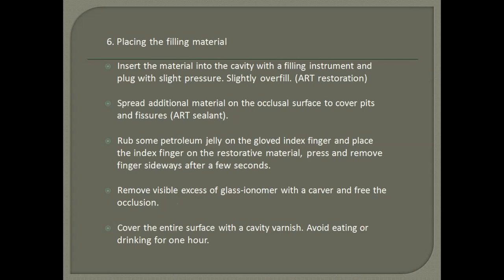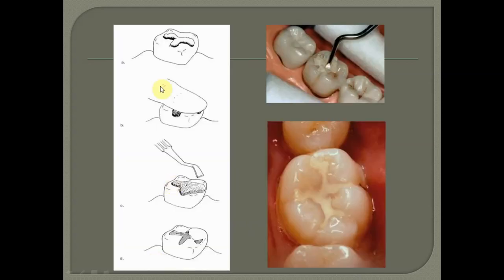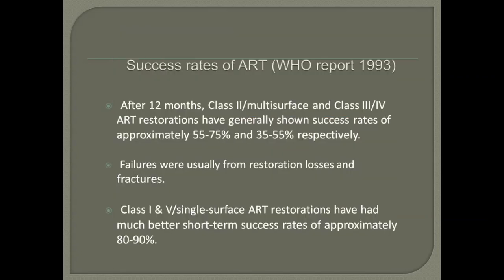The patient should be instructed not to eat or drink for one hour. Using the finger technique, once material is placed, petroleum jelly is applied and pressed sideways so it is perfectly seated. Instruments can be used to remove any overhanging material or high points. The success rate is approximately 55–75% for single-surface restorations and 35–55% for Class II and Class III cavities after one year.